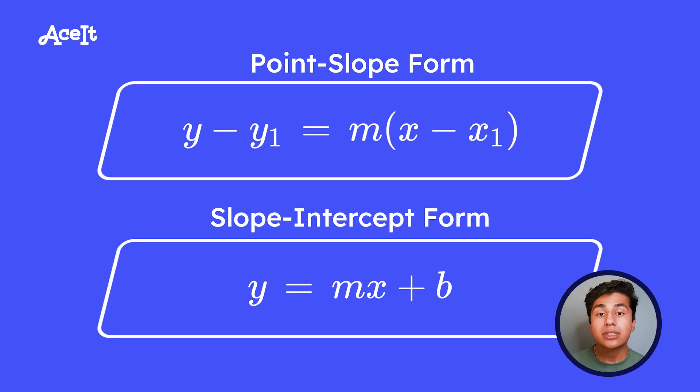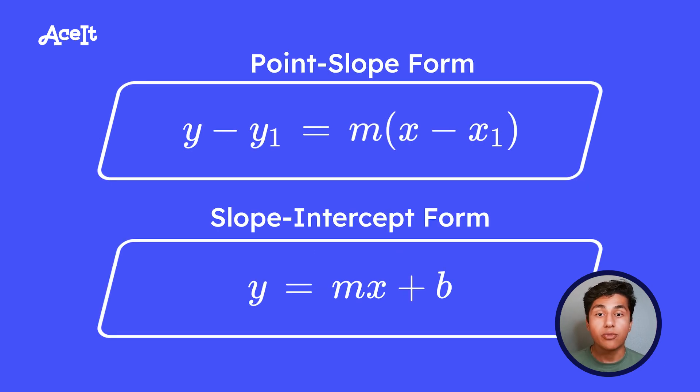In the last video, we talked about slope-intercept form and point-slope form. Know that these forms are applied when you're working with functions because functions establish relationships between variables.